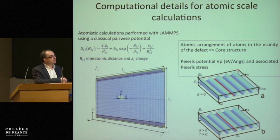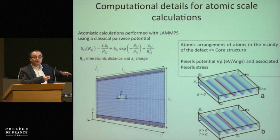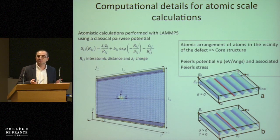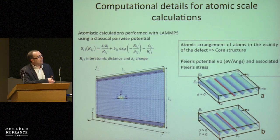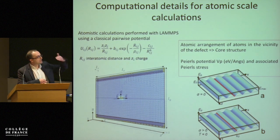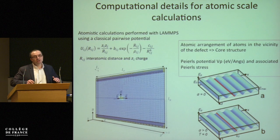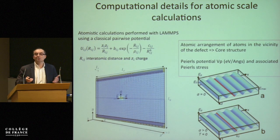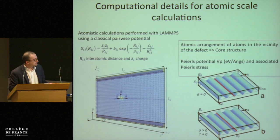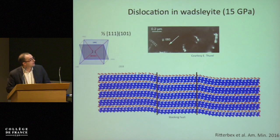When you apply stress, the dislocation has to overcome the lattice friction of the material. The lattice friction is represented here in green as a kind of valley — we call this the Peierls potential. So if you want to move a straight dislocation, you have to push on it with a critical stress called the Peierls stress.